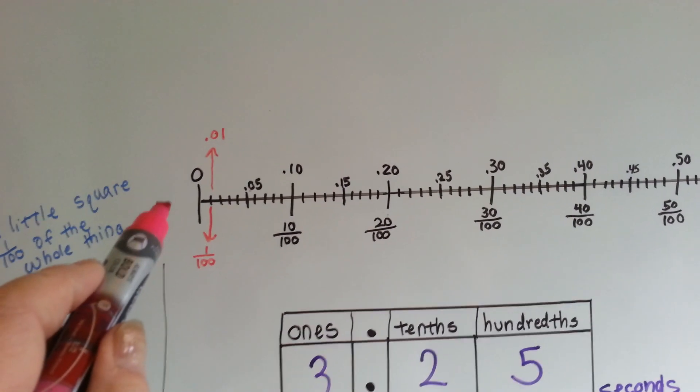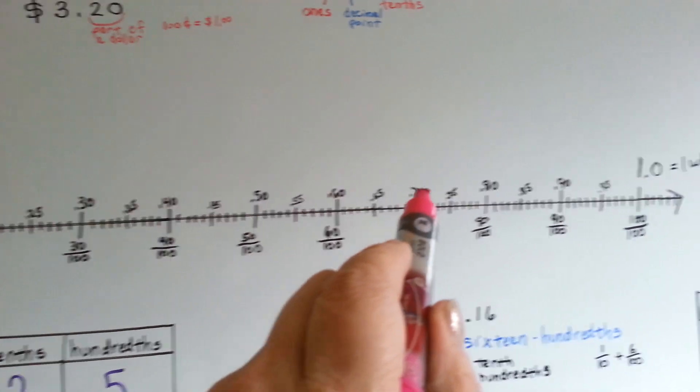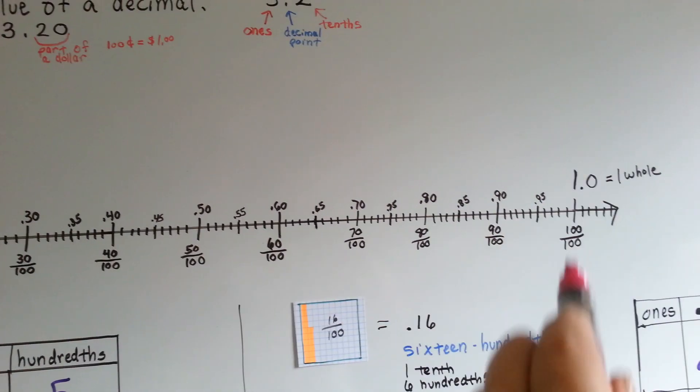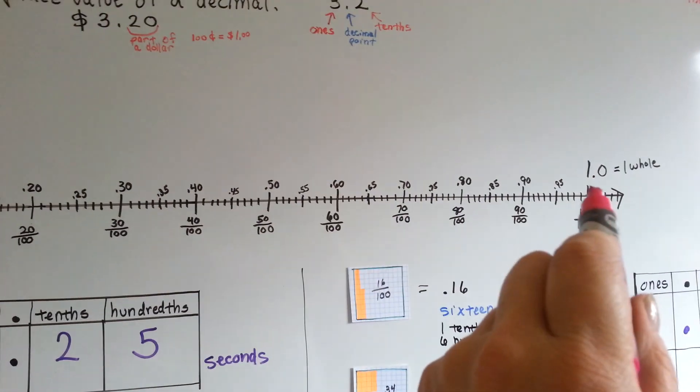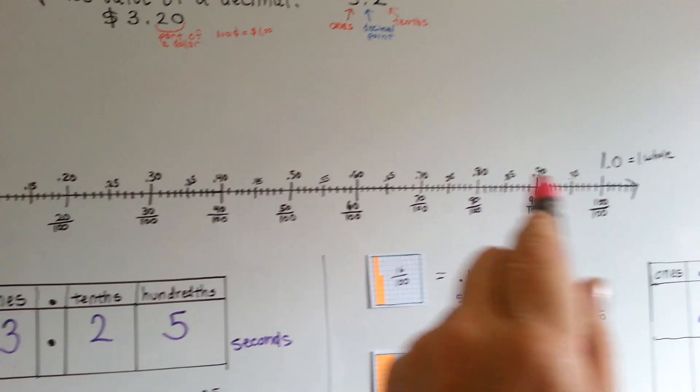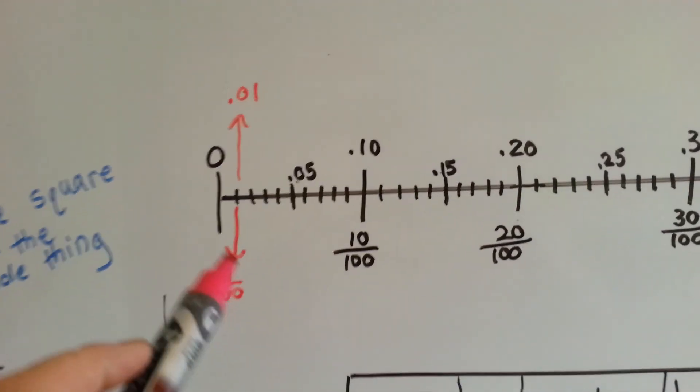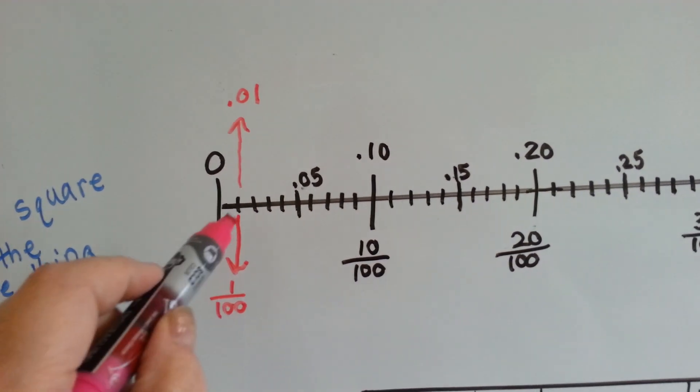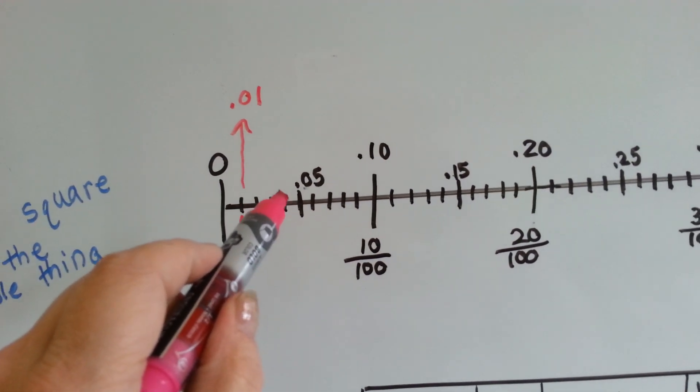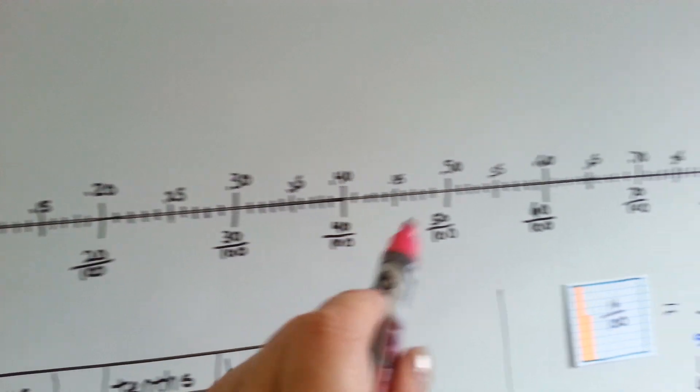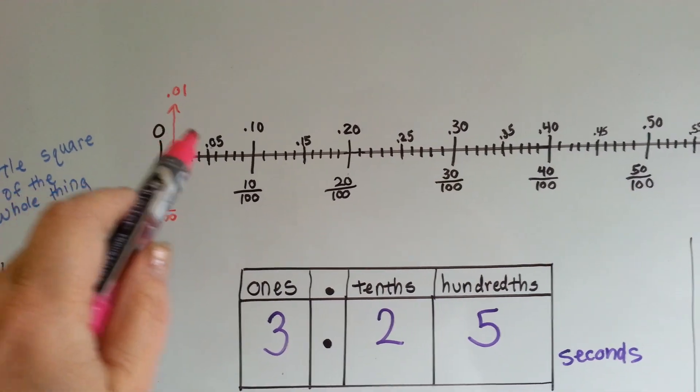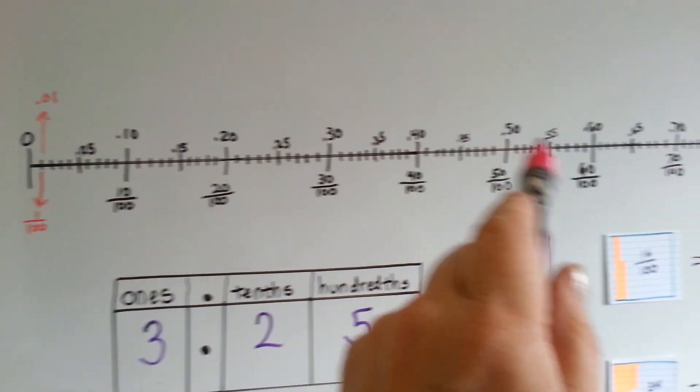Now we have a very long number line here. Look at this, look how long this thing is. All the way to here, that's one. That's one whole, just one. And all of this in between zero and that one is a hundred parts. So if we look closely, this first little line is one one hundredth, two one hundredths, three one hundredths, four one hundredths, five one hundredths, until we get to ten one hundredths. And then it goes twenty, thirty, forty, fifty, all the way to the end to one whole. So that is how we look at hundredths. There's a hundred little parts.